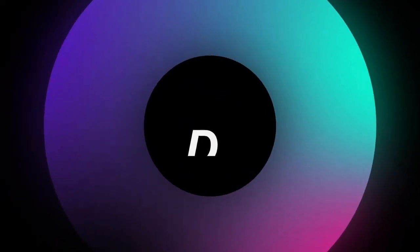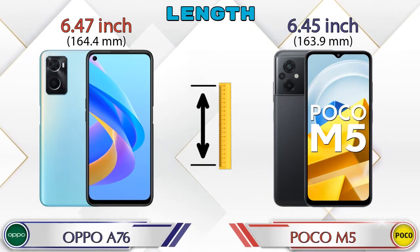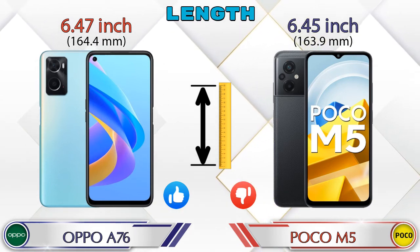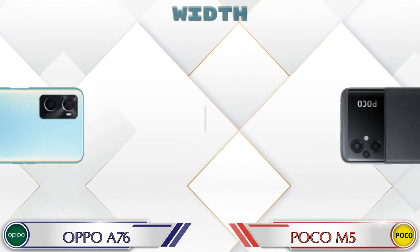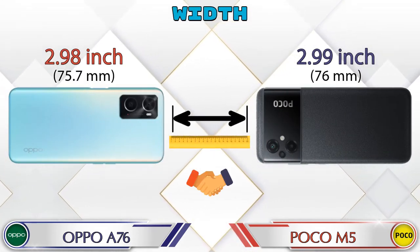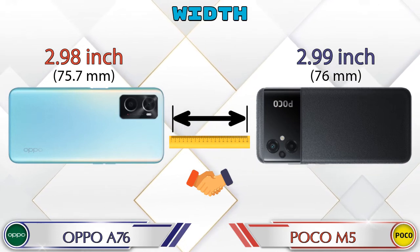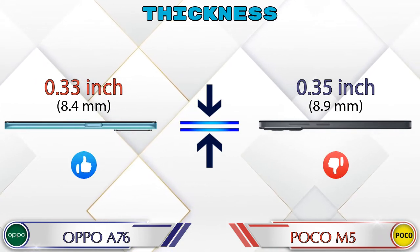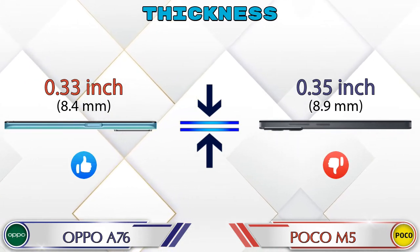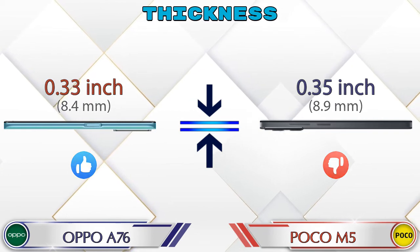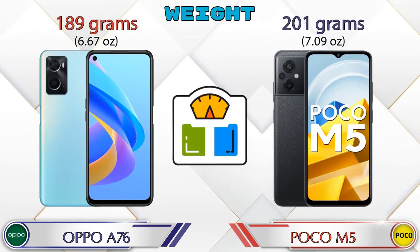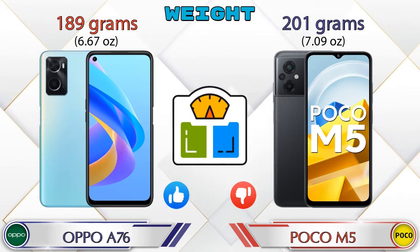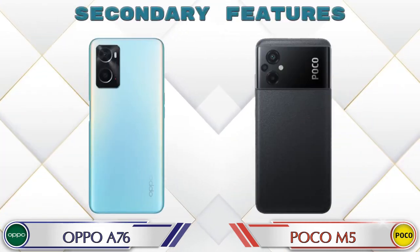Now let's check the dimensions. Talking about the length: A76 is 6.47 inches and Poco M5 is 6.45 inches, which is slightly less. Width: A76 is 2.98 inches and Poco M5 is 2.99 inches — almost the same. Thickness: A76 is 0.33 inches and Poco M5 is 0.35 inches, which is slightly bigger. Weight: A76 is 189 grams and Poco M5 is 201 grams, which is heavier.